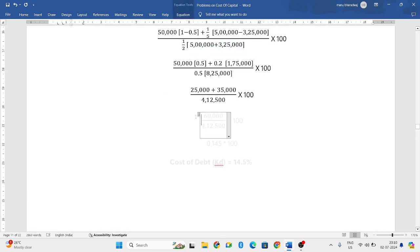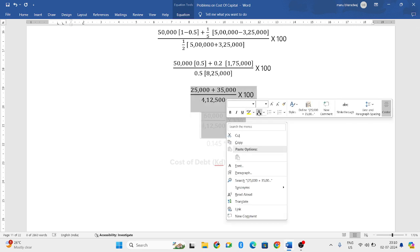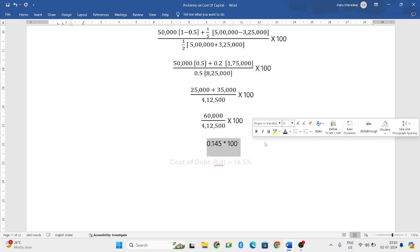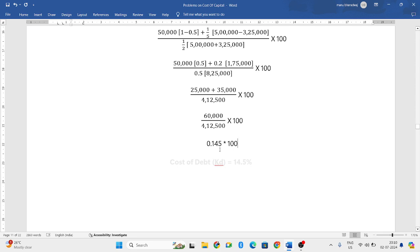Next, again, when you further simplify this formula, 25,000 plus 35,000 will be 60,000. And 4,12,500 I will write as it is. 60,000 divided by 4,12,500 will be 0.145 into 100. When you multiply it, you will get the cost of debentures. That is 14.5 percentage.